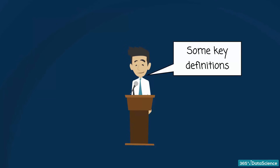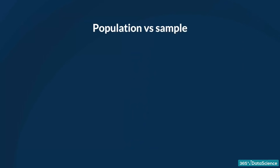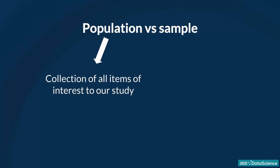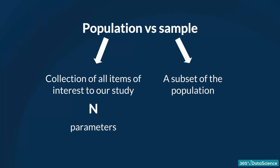The first step of every statistical analysis you will perform is to determine whether the data you are dealing with is a population or a sample. A population is the collection of all items of interest to our study and is usually denoted with an uppercase N. The numbers we've obtained when using a population are called parameters. A sample is a subset of the population and is denoted with a lowercase n, and the numbers we've obtained when working with a sample are called statistics.